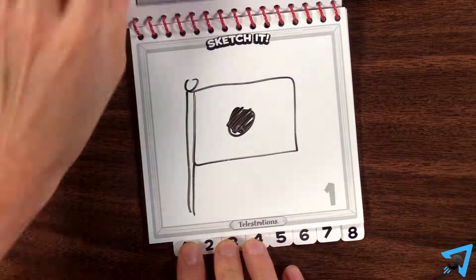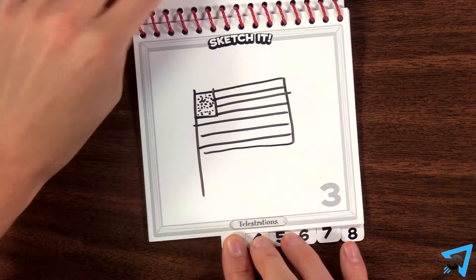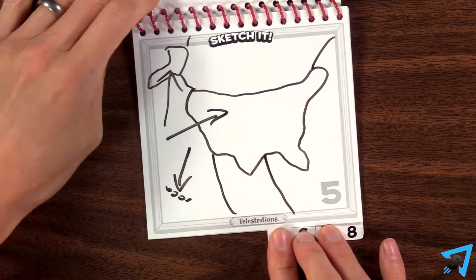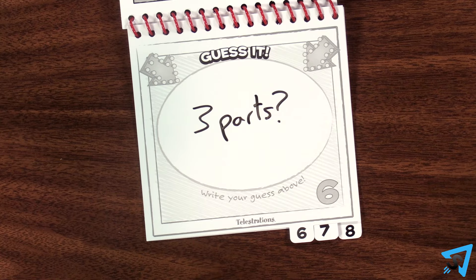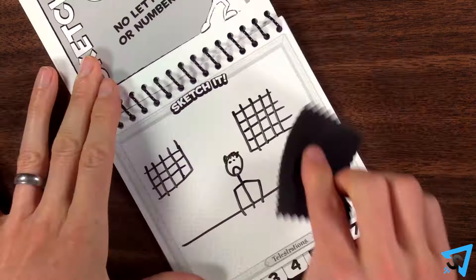Now, one at a time, each player takes a turn flipping through their book from beginning to end to show everyone what the outcome was. Erase the boards to play again.